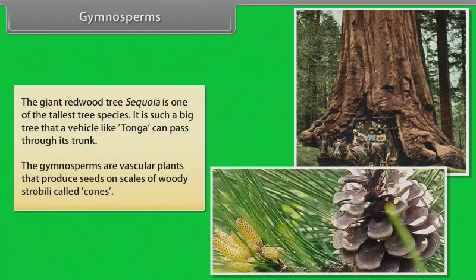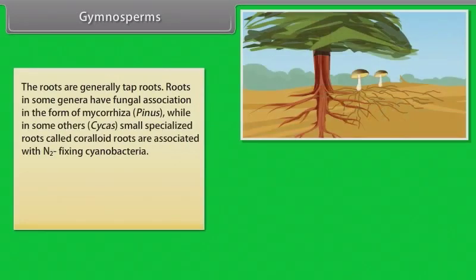The Gymnosperms are vascular plants that produce seeds on scales of woody strobili called cones. The roots are generally tap roots. Roots in some genera have fungal association in the form of Mycorrhiza in Pinus, while in some others like Cycas small specialized roots called Coraloid roots are associated with N2 fixing cyanobacteria.